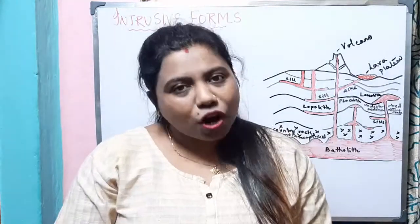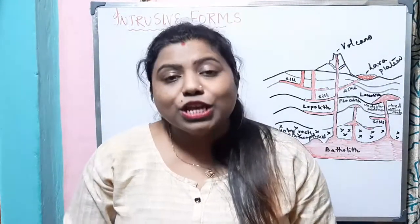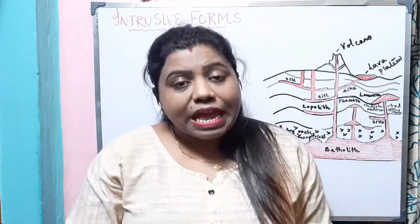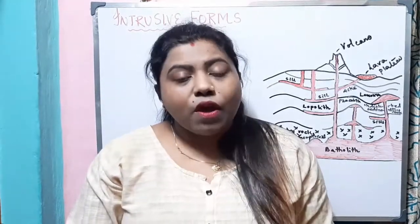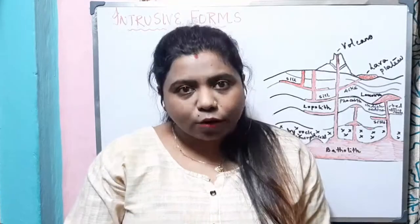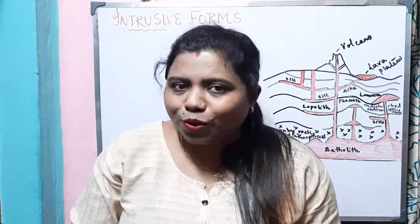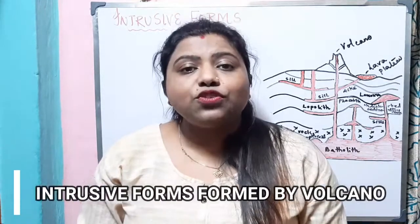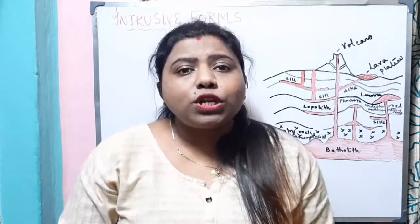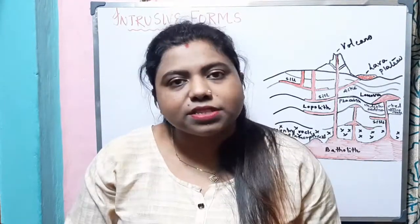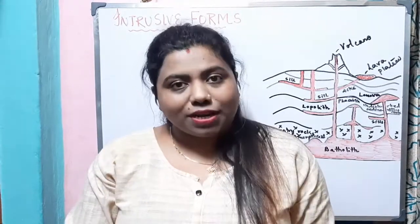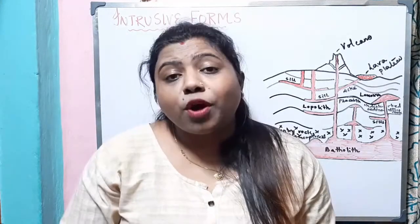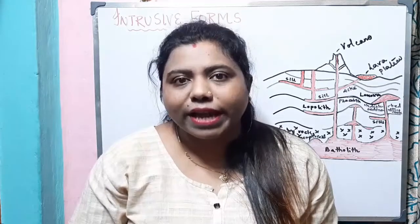Hello everyone, welcome back to my geography class. I hope all of you are doing well. Today we will discuss another important topic from the chapter 'Interior of the Earth' for Class 11. In our earlier videos we discussed volcanoes — what a volcano is, the different types of lava, and the different types of volcanoes. Now let us start with another important topic: intrusive forms formed by the volcano. A volcano is a rupture in the earth's crust that allows hot lava, volcanic ashes, and gases to escape from the magma chamber below the surface.